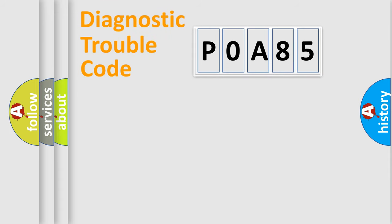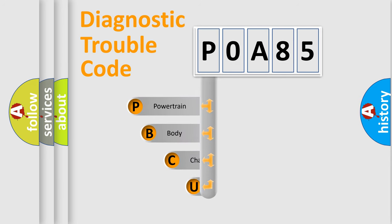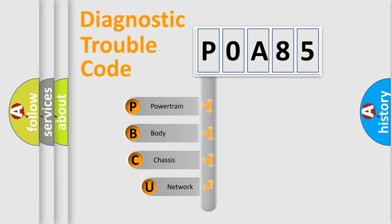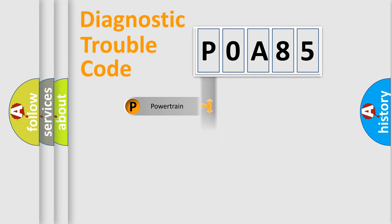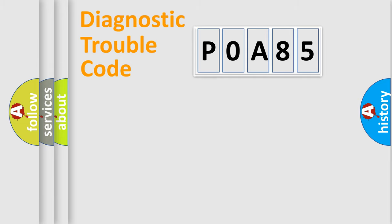Let's do this. First, let's look at the history of diagnostic fault code composition according to the OBD-II protocol, which is unified for all automakers since 2000. We divide the electric system of an automobile into four basic units: Powertrain, Body, Chassis, and Network.